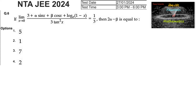If limit x tends to 0, [3 + α·sin(x) + β·cos(x) + log(1 - x)] / (3·tan²x) is equal to 1/3, then 2α - β is equal to?